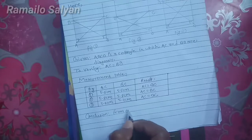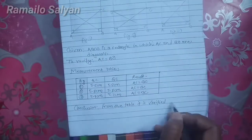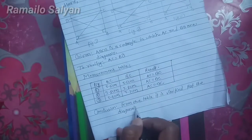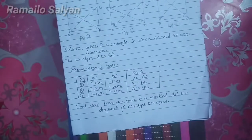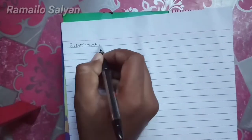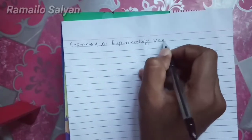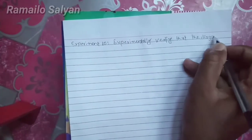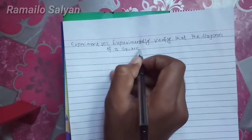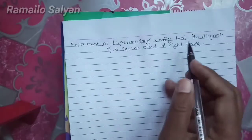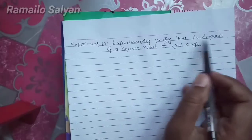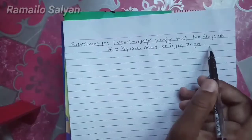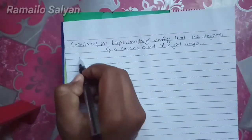We have finished experiment number nine. Now we are going to learn experiment number ten: the diagonals of a square bisect at right angles. In this statement, a square with diagonals is given and we have to verify that the diagonals bisect at right angles. We start with the construction of three squares having different shapes and sizes.